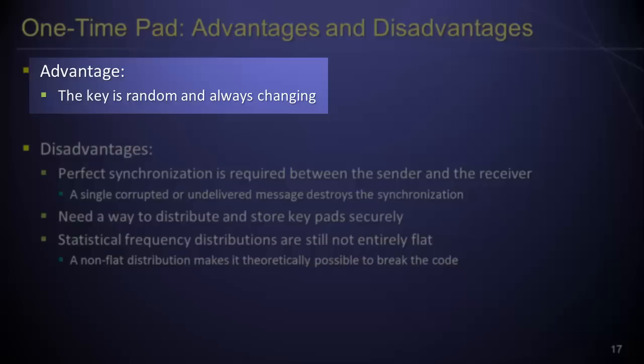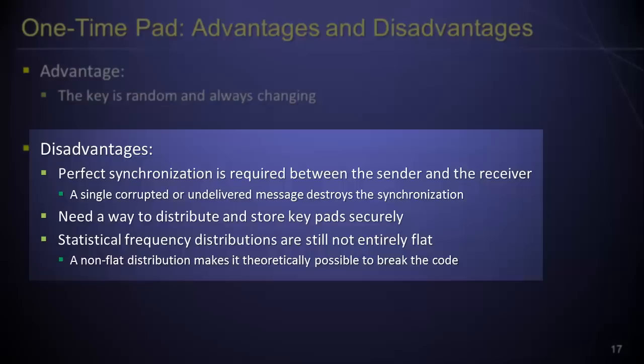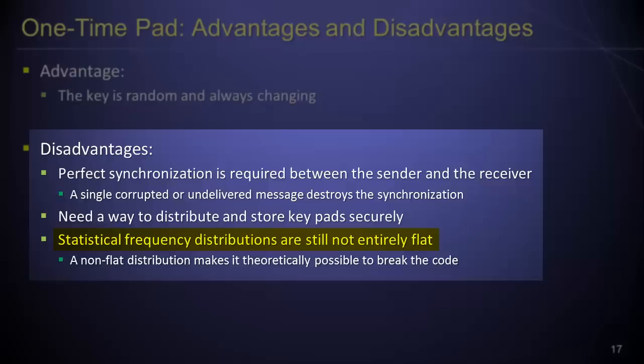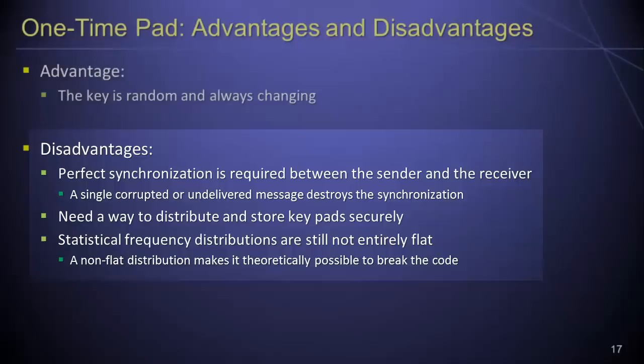The major advantage of using a one-time pad is that the key is random and always changing. There are, however, several disadvantages. First, the one-time pad requires perfect synchronization between the sender and the receiver — a single corrupted or undelivered message would destroy synchronization and make further secure communication impossible. Second, a way is needed to distribute and store the keypads securely. Third, the statistical frequency distributions of the resulting ciphertext are still not perfectly flat, and when a non-flat frequency distribution exists, it is theoretically possible to break the encrypted message.